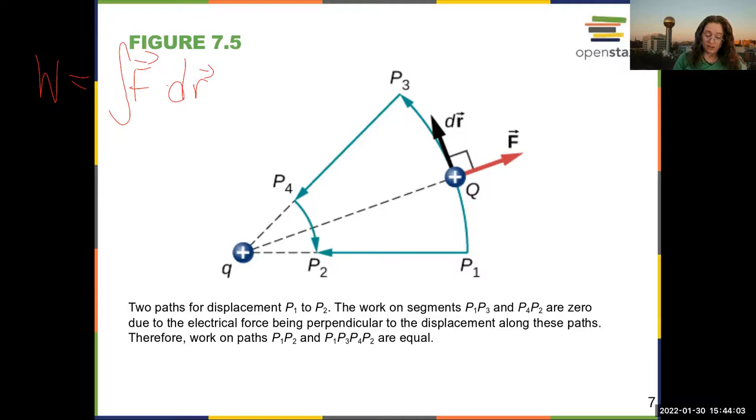Because it's a conservative force, you can go any direction if you end up in the same place. So we're going to look at two different paths to go from point 1 to point 2.